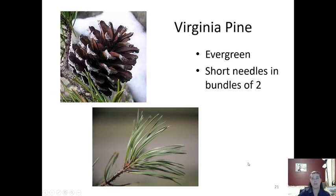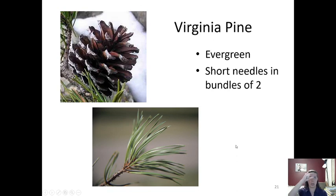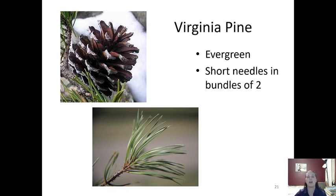Next is Virginia pine. Virginia pine has smaller cones — pretty short and almost round in structure — and much shorter needles than loblolly pine. The thing that gives it away as Virginia pine is that the needles are in groups or bundles of two instead of three. Groups of two is going to be our Virginia pine.